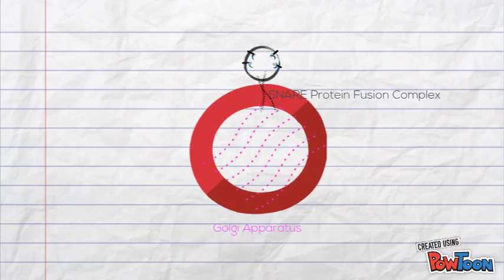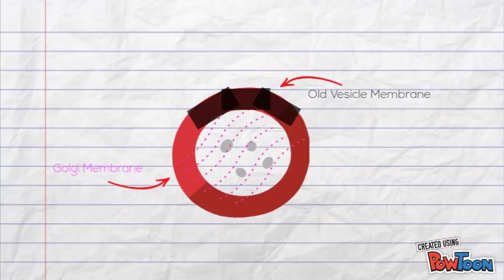Snares bypass this problem by winding together to form a fusion complex, which squeezes out any molecules that remain trapped between the two membranes. The lipids can then come together to form a continuous membrane and the cargo is released into the organelle.